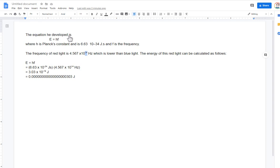Okay. The equation Max Planck developed was E equals HF. Where H is Planck's constant. And Planck's constant is always 6.63 times 10 to the negative 34th power joule seconds. And F is the frequency. So, our example. The frequency of a particular kind of red light, a particular shade, is 4.567 times 10 to the 14th power hertz, which is lower than blue light. Okay. The frequency of red light should be lower than blue light.